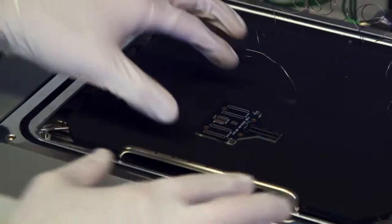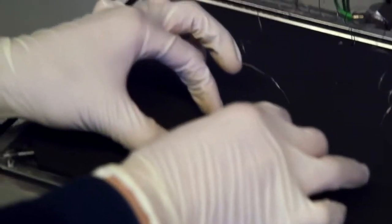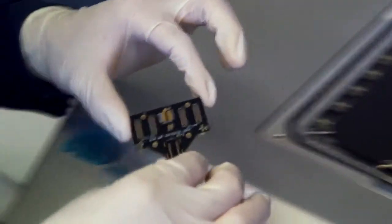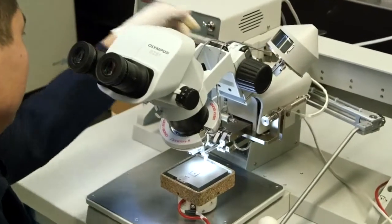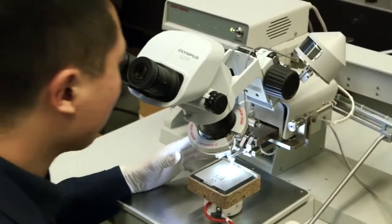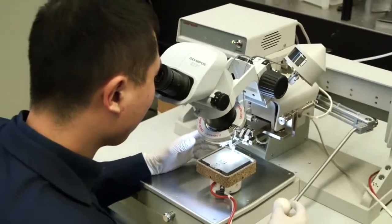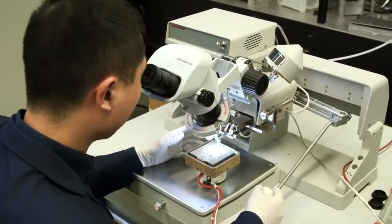Once the die is fixed to the printed circuit board, it's ready for wire bonding. After placing the chip under the microscope, turn on the hot plate. Heating the substrate makes it easier for bonds to form.